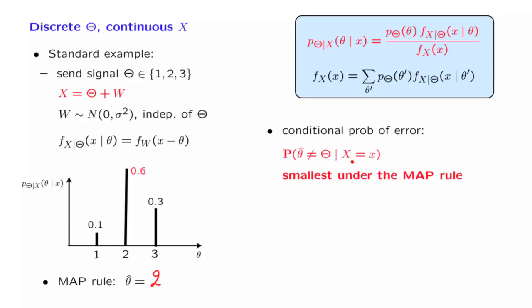Now, the fact that x is continuous really makes no difference once we arrive at this picture. With the MAP rule, we still choose the most likely value of theta, and this is our estimate. And we can calculate the probability of error, which for the MAP rule would be 0.4. Exactly the same argument as for the case of discrete observations applies, and shows that this conditional probability of error is smallest under the MAP rule.